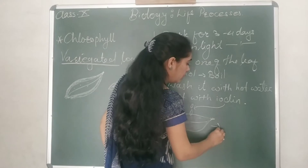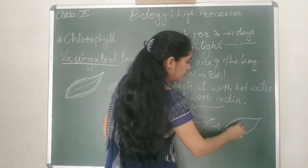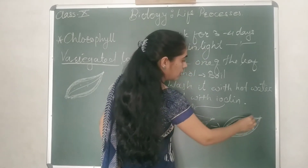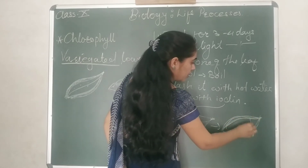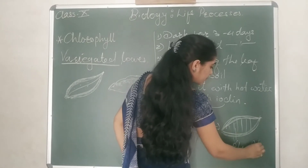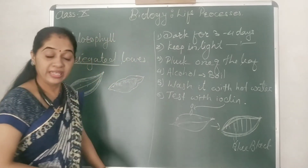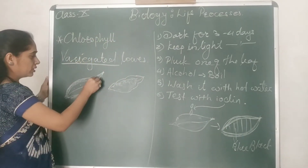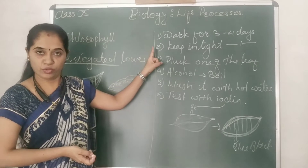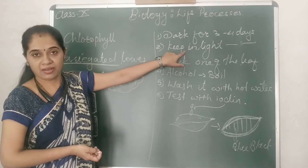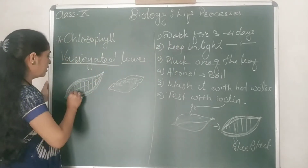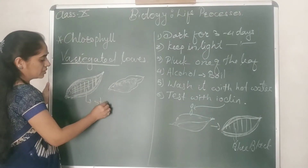After that, what will you notice? You will notice that the border region of the leaf does not get converted into blue-black color. But the center portion — that turns into blue-black color. What does it indicate? It indicates that the center portion, in which chlorophyll pigments were present, is where photosynthesis occurred when we kept it in sunlight. Photosynthesis happened there, and that is why starch was produced only in that region.